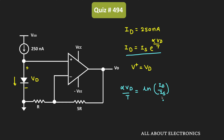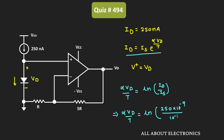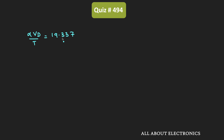So here we already know the values of Id as well as Is. So further we can write it as α times Vd divided by T, that is equal to natural log of 250nA, that is 250 times 10 to the power minus 9, divided by Is, which is equal to 10 to the power minus 15. So if we calculate the value of this natural log, then it will come out as 19.337. So from this we can say that α times Vd divided by T is equal to 19.337.